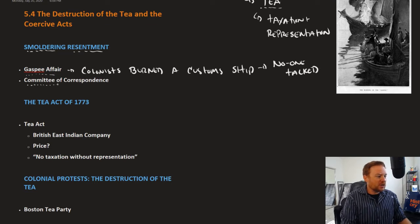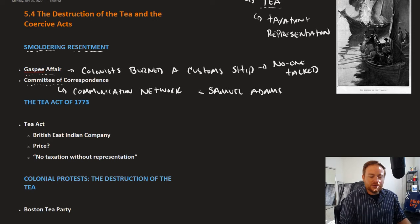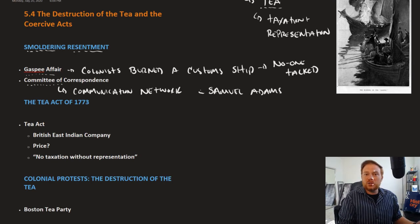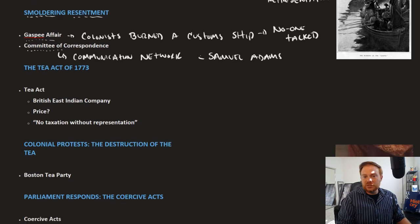Meanwhile, the colonists set up a communication network. The Committees of Correspondence were a communication network between the colonists — a way, especially for people like Samuel Adams who was instrumental in setting this up, to communicate with one another off the grid, away from formal lines of communication that might get them caught by British authorities. You see the beginnings of what we might call a shadow government being built.